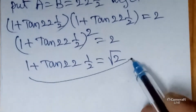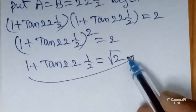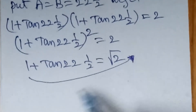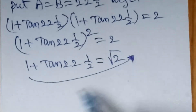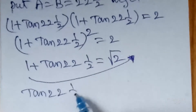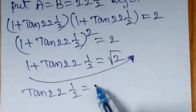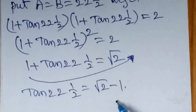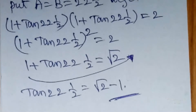Bringing 1 to the right side, tan 22.5° equals root 2 minus 1, which is the required result.